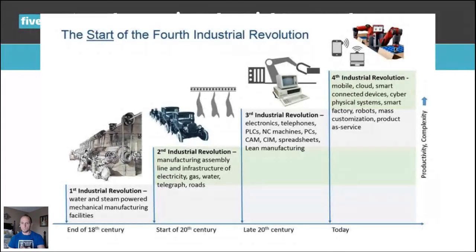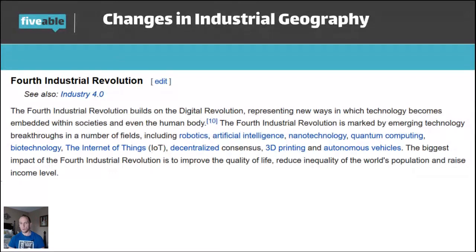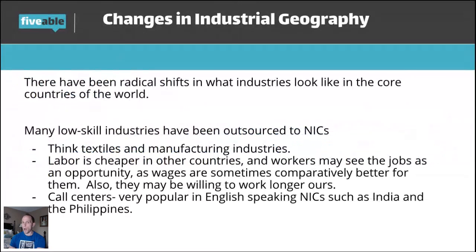The Fourth Industrial Revolution, built on the digital revolution, represents new ways in which technology becomes embedded with societies and even the human body. Different types of communication technologies — things like Skype, messaging, social media — as well as transportation technologies have improved so dramatically that the way we do business today is radically different from 100, 50, or even 20 years ago. There have been radical shifts in what industries look like in the core countries of the world.